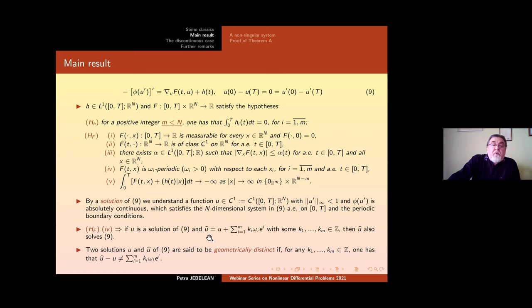From this HF4 concerning the ω_i periodicity with respect to the first components, we infer that if u is a solution of 9, then u hat equal to u + sum from i=1 to m, k_i ω_i e_i, e here e_i is the canonical basis in R^n, with some k_1 to k_m in Z, then also u hat solves problem 9.